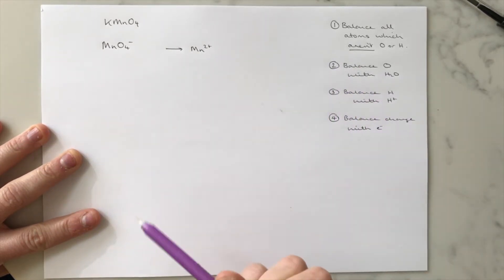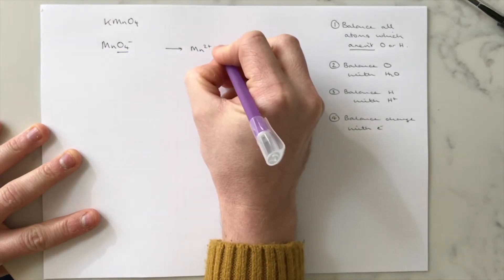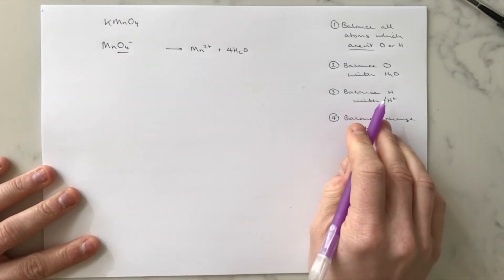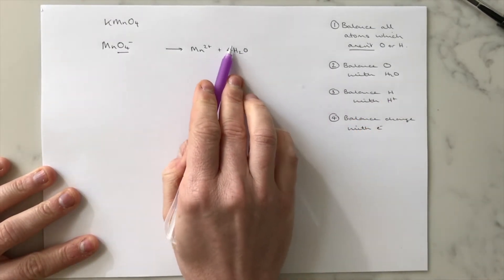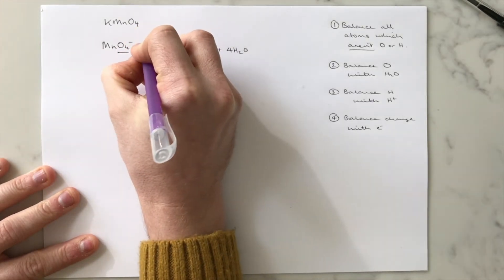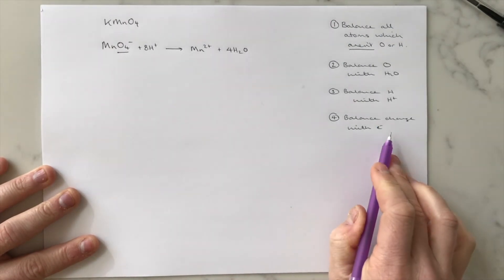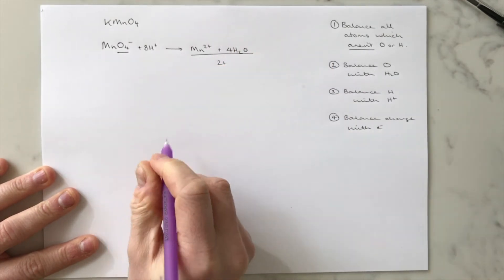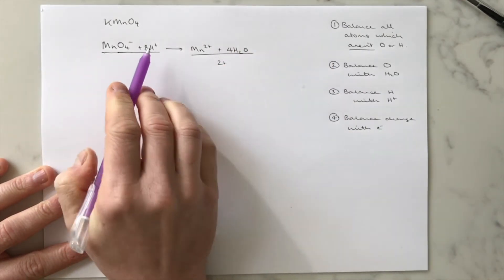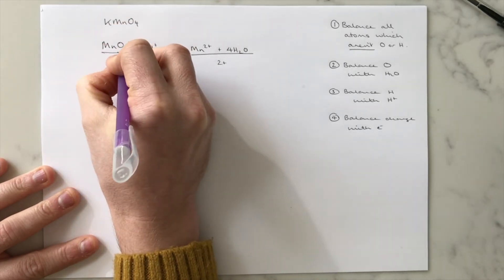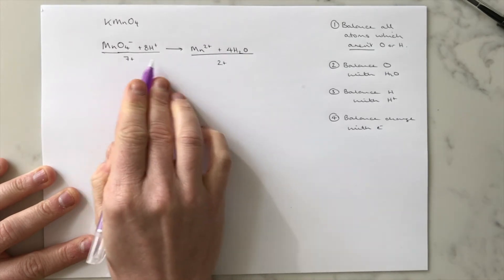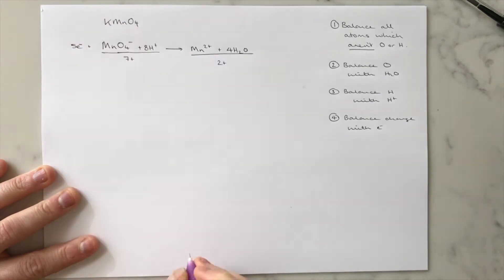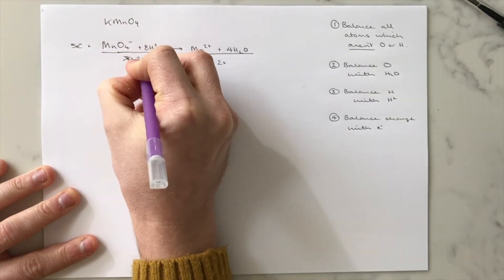Step two: balance oxygens with water. Because I have four oxygens, I need four waters on the right-hand side. Step three: balance hydrogens with H⁺. I've got eight hydrogens on the right, so I need eight H⁺ on the left. Step four: balance the charge with electrons. This side has an overall 2+ charge. The left side is 8+ minus 1, giving a net charge of 7+. So I need to add five electrons onto the left-hand side to give it an overall 2+ charge to match.